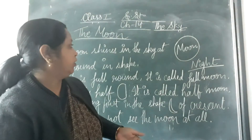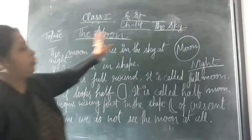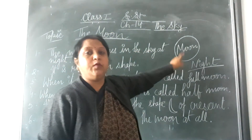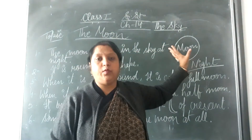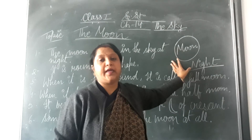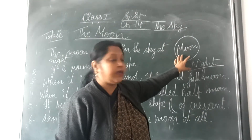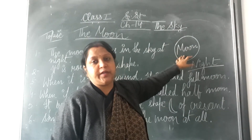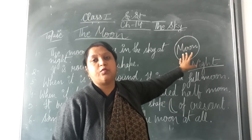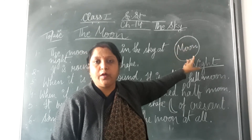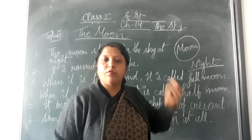Isko alag-alag naamon se jaante hain. When it is full round, it is called full moon. Iskoon kya kehenge? Jab aapko yeh full shape mein dekhe ga, then we call it full moon. It is called full moon. What do you call it? Full moon.